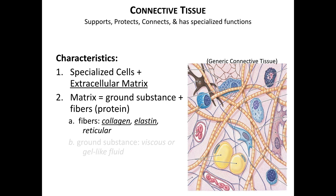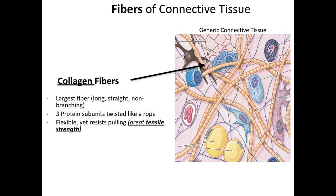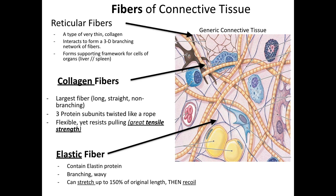Collagen fibers are large, ropy strands and their main functional feature is that they resist pulling forces, which is referred to as tensile strength. Elastic fibers are the second major type — they also resist pulling forces a little bit, but the main feature is that they stretch and, importantly, recoil back into shape. The last type of fibers are called reticular fibers, which are another type of collagen; we'll generally not talk too much about these.